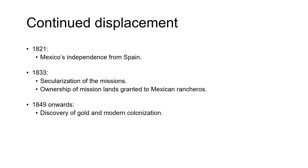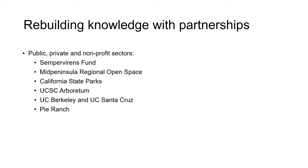Native Americans' treatment in California was no better after Mexico's independence from Spain in 1821 and the subsequent secularization of the missions in 1833, when ownership of mission lands was granted to Mexican rancheros instead of being returned to indigenous people. 1849 and the discovery of gold in California was the catalyst for a vast influx of immigrants and the start of modern colonization of the region. The displacement of native people from their lands and communities by these continuous periods of colonization has resulted in the loss of many of their traditional ways, stories and histories, including their intentional stewardship of the land.